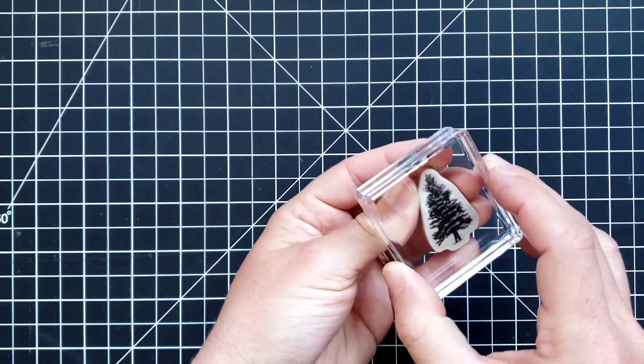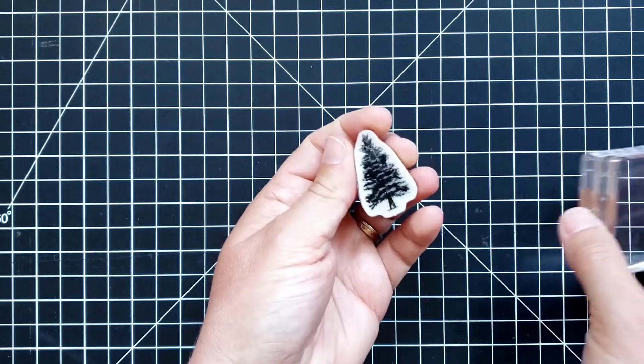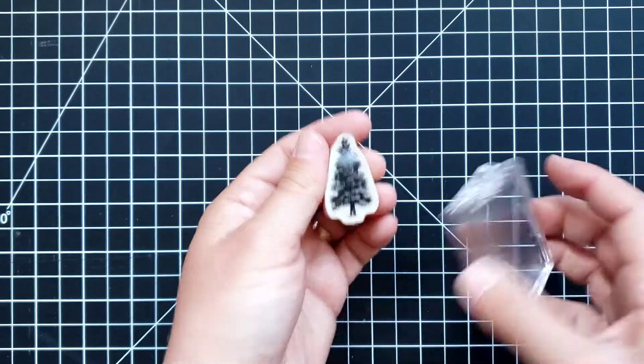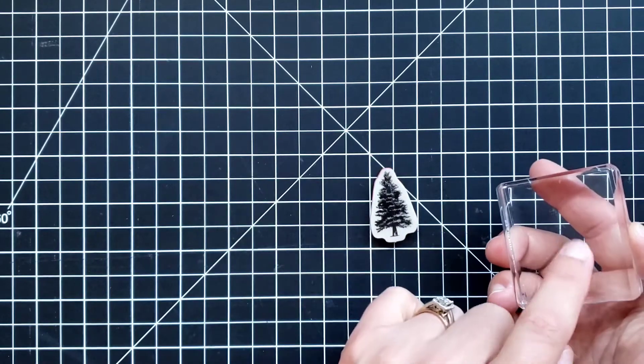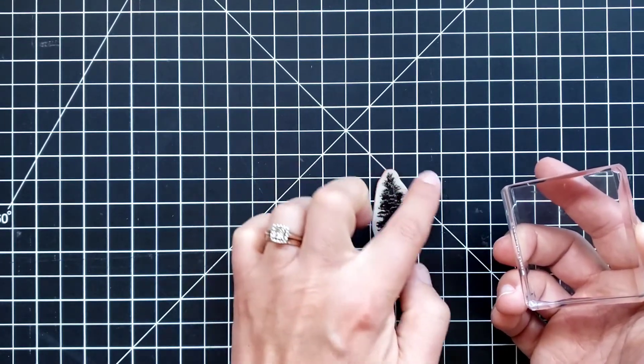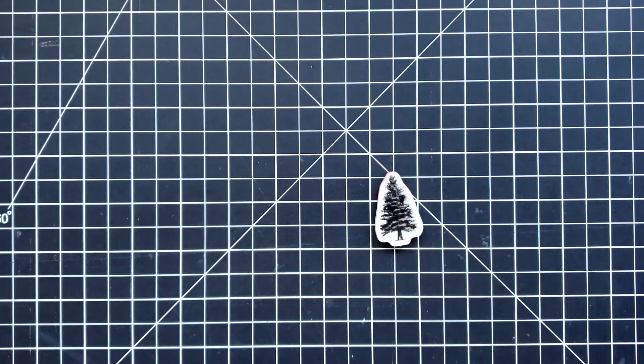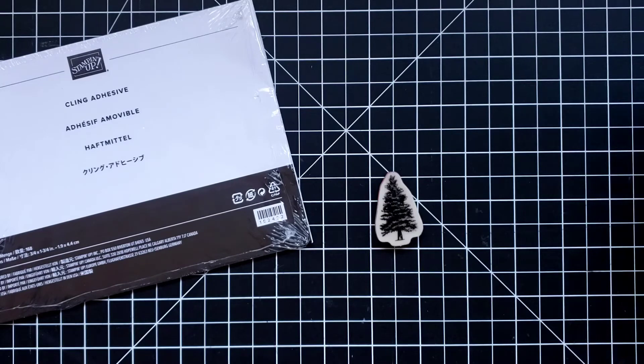There we go, it is nice and stuck to that block. When I go to pull it off, the cling stays attached and it's not trying to stay stuck to that block. Like I said, happened a few times when I was trying to peel my stamp off and the cling was actually a little bit outside of that stamp area. So I hope this is helpful. I really like this adhesive. I am definitely going to be using it on my old stamps that did not have the cling adhesive when they came.